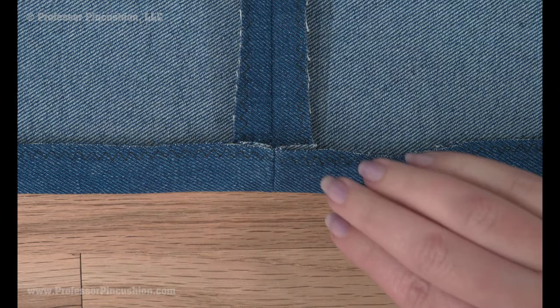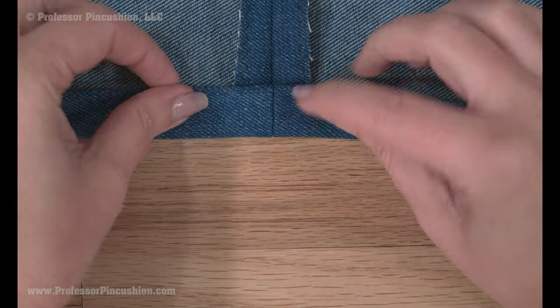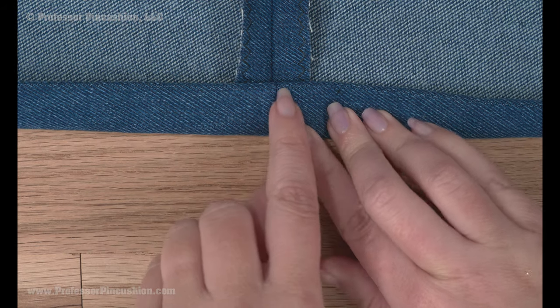With denim, you'll want to have a wider hem allowance due to bulk, at least over an inch. A good measurement is to fold three quarters of an inch and then fold again the same measurement and stitch along the top folded edge.